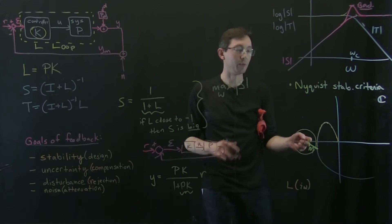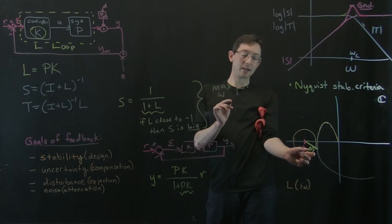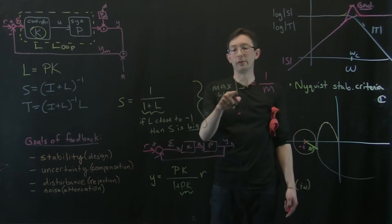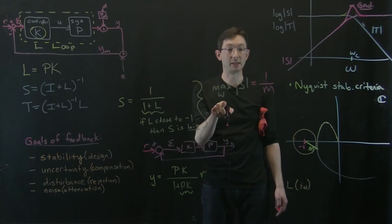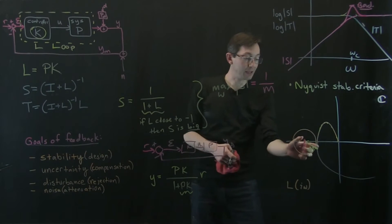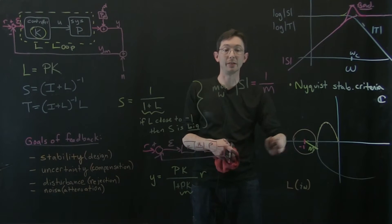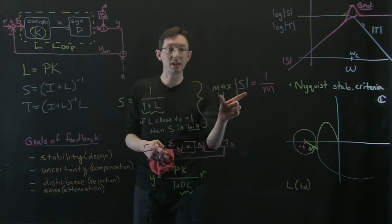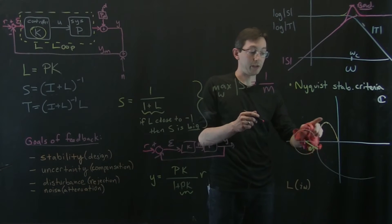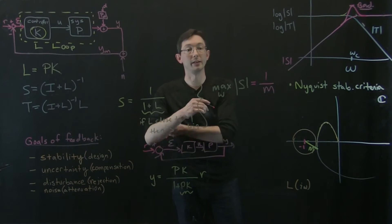That's a cartoon — not exactly what's going on, but good enough for discussion. The minimum distance, m, turns out to be one over the maximum peak in the sensitivity. So if I have a maximum peak in the sensitivity that's 10, that means I'm only 0.1 away from the instability point — really close to instability. The bigger the peak in the sensitivity function, the closer the loop transfer function is to that unstable negative one point in the complex plane.